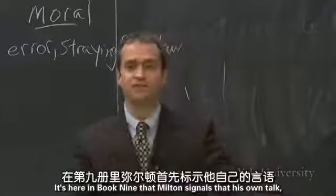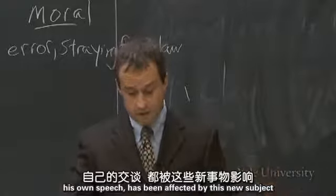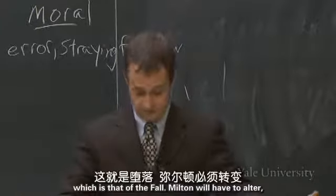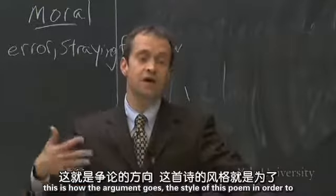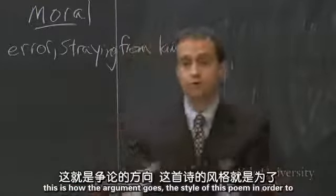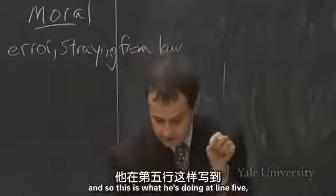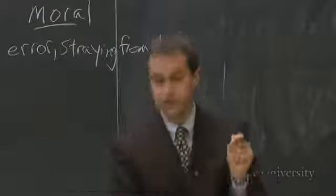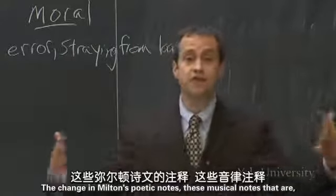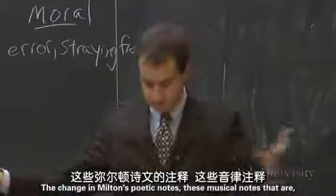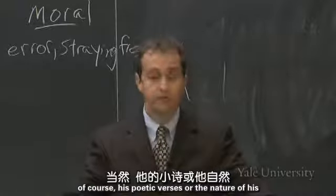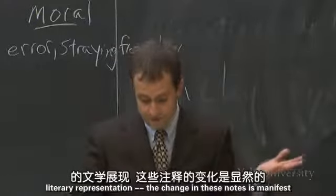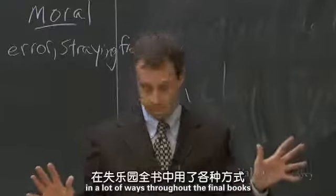In Book 9, Milton signals that his own talk, his own speech, has been affected by this new subject — the fall. Milton will have to alter the style of his poem in order to suit the subject matter of the fall. This is what he tells us he's doing at line 5: "I must now change these notes to tragic." The change in Milton's poetic notes — his poetic verses, or the nature of his literary representation — is manifest in many ways throughout the final books of Paradise Lost.